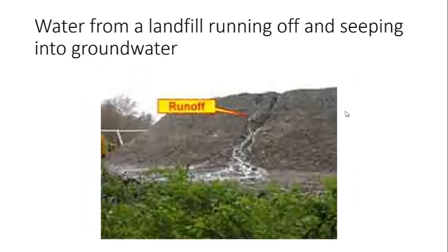Let's try another. Water from a landfill running off and seeping into groundwater — write point source or non-point source pollution on your paper now. If you identified this as non-point source pollution, you are correct. Again, it's an example of runoff, and in runoff, pollution is coming from many different places. Because it's coming from many different places, it's harder to control, and it's called non-point source pollution.